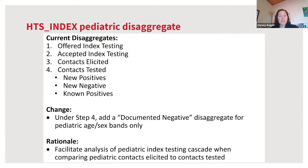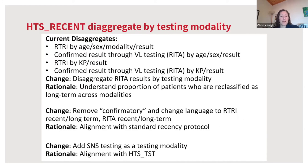Under HTS Index, for the contacts tested disaggregate, an additional disaggregate for documented negative will be added for pediatric age/sex bands only, facilitating analysis of the index testing cascade for pediatrics. For HTS Recent, there are several changes: confirmed RITA results will be further disaggregated by testing modality; the term 'confirmatory' is removed from the indicator definition and language is aligned with standard protocols for RTRI recent/long-term and RITA recent/long-term. Additionally, in alignment with changes to HTS-TST, SNS testing will also be added as a testing modality.